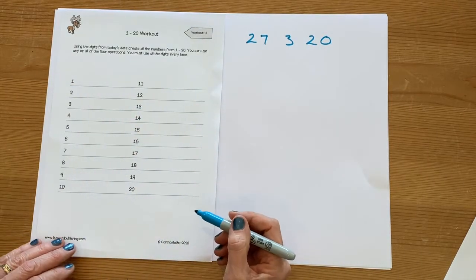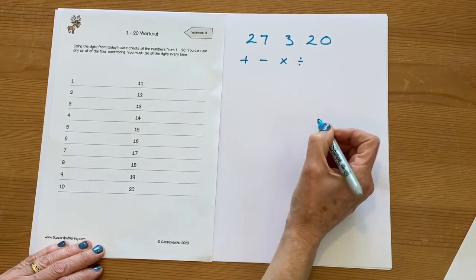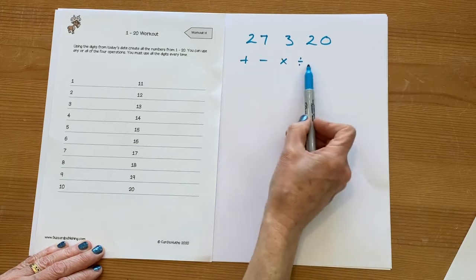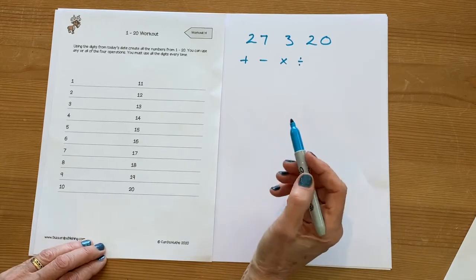You're using addition, subtraction, multiplication, division - any combination of those. You don't have to use them all; you could use the same one several times, but you must use all five digits.